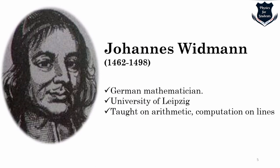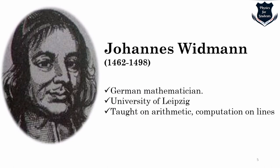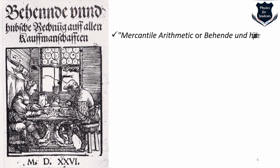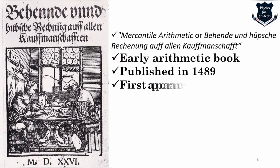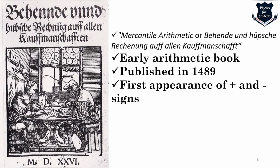His lectures were advertised and students were invited to attend. Widman's 1486 algebra lecture was the first to be given in Germany on that topic, and amazingly, a notebook of a student who attended still survives. His most famous work is an early arithmetic book — Behend und Hübsche — which, translated into English, means 'nimble and pretty reckoning for all merchants.' It was published in German in 1489.